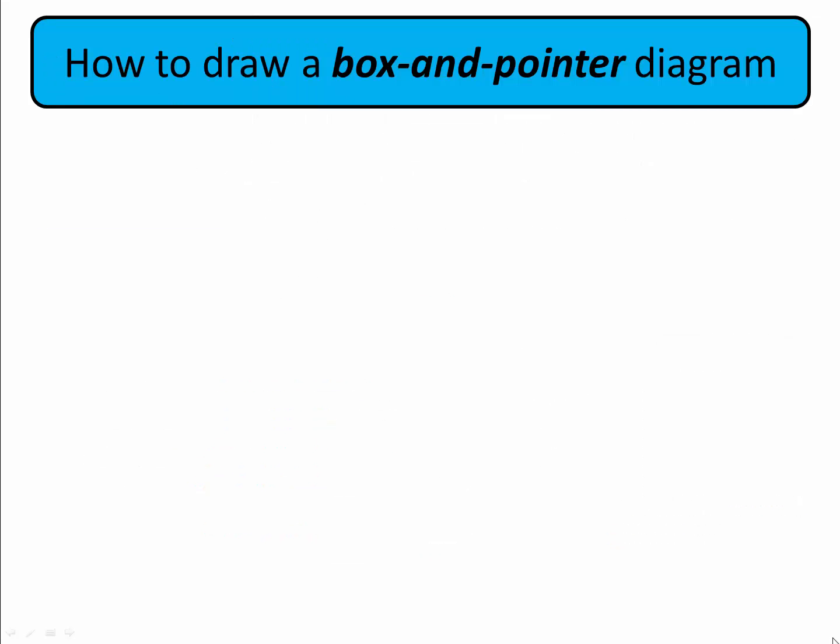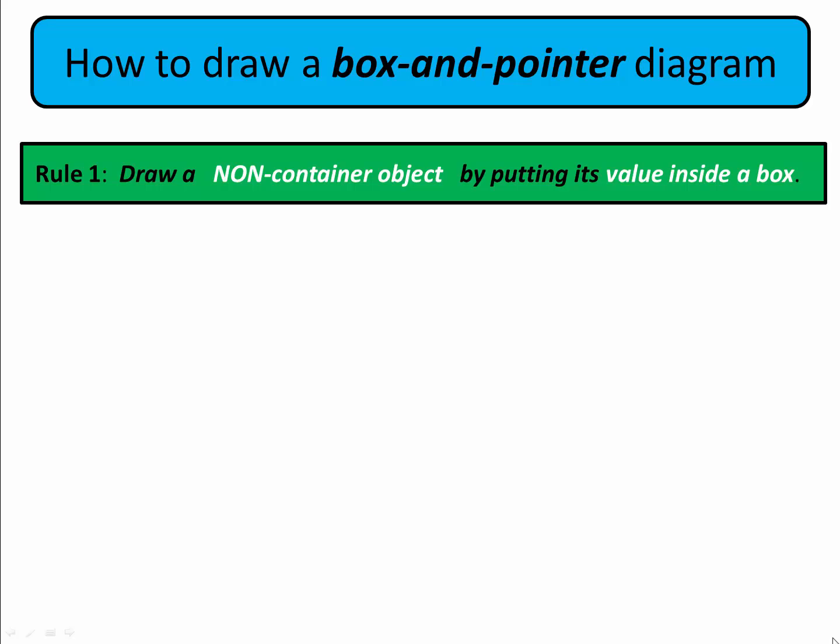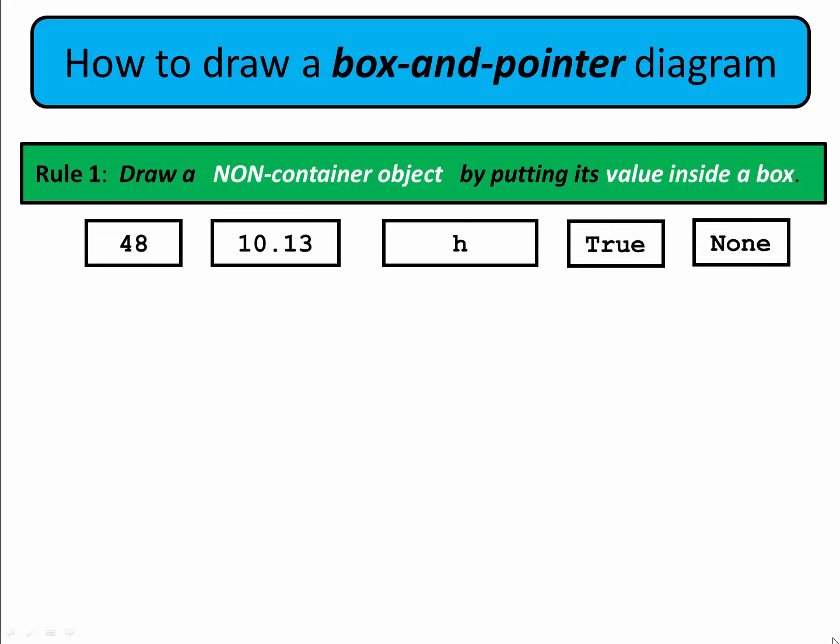Now let's see how to draw a box and pointer diagram. There are four rules. The first is to draw a non-container object by putting its value inside a box. For example, the number 48 would be placed in a box, as would the floating point number 10.13, the character H, and the keywords true and none.